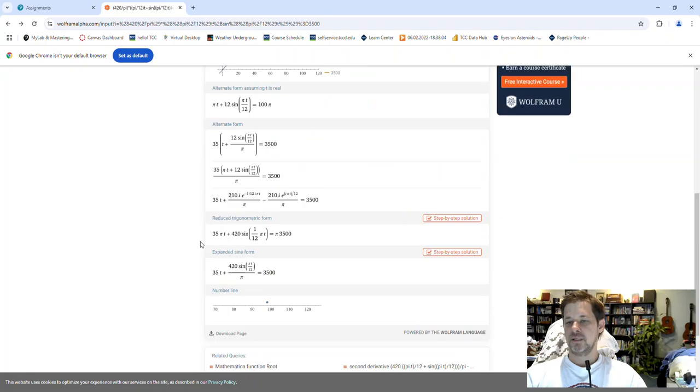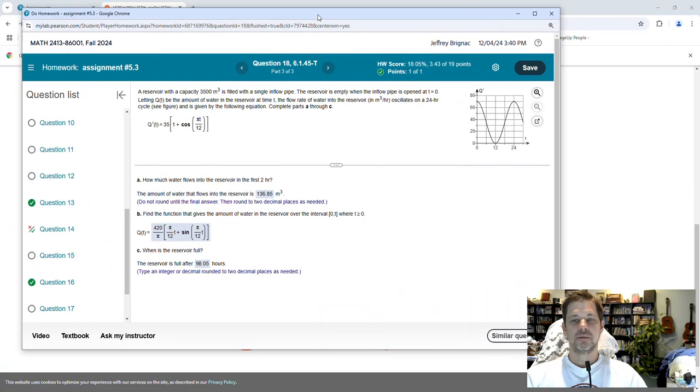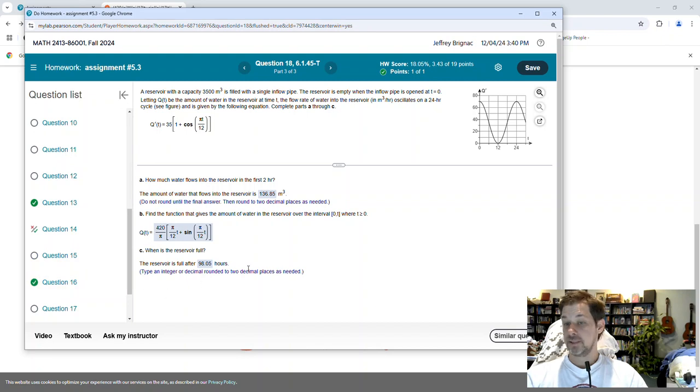Here, I use Wolfram Alpha. I don't have a graphing calculator. I just said solve it, and here's how it gave me the solution on the number line there. That blue dot's the answer. That's t that gives me the solution to that equation. It says 98.048, and I round that to two decimal places, I get 98.05. So that's how it's done.